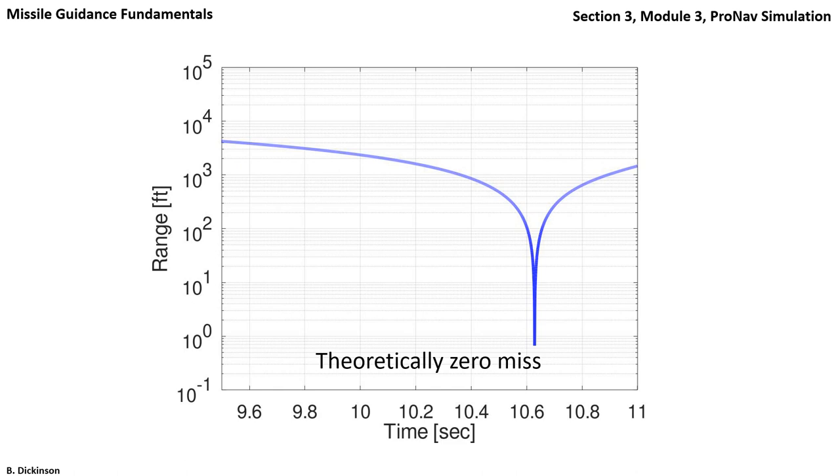If we reduce the time step size, the miss decreases further. After the miss, range increases because the pursuer passes the target.